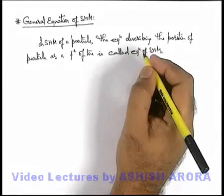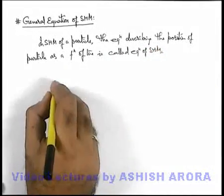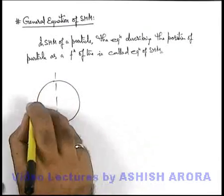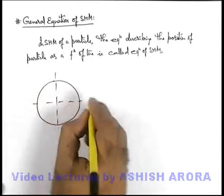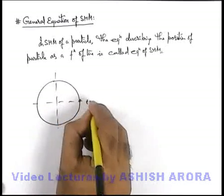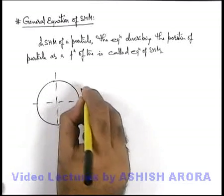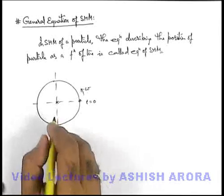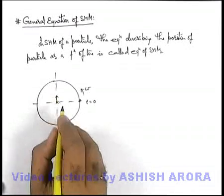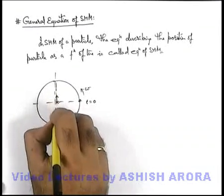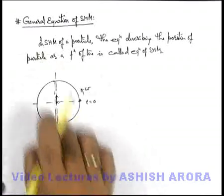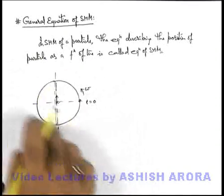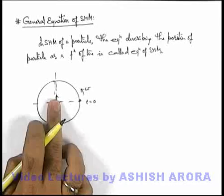As we have just now studied, in the case of projection of uniform circular motion, if a particle starts at t equal to zero at an angular speed omega, in such a way that its projection is starting from mean position and is moving up and down, back and forth, above and below this mean position due to the projection of circular motion.